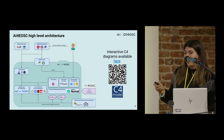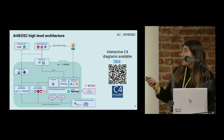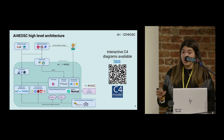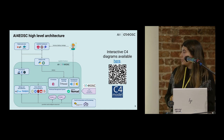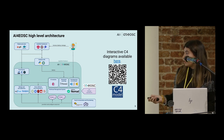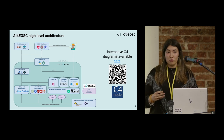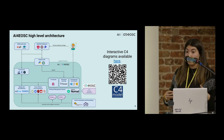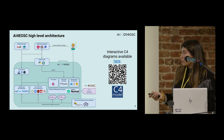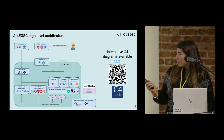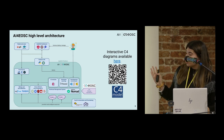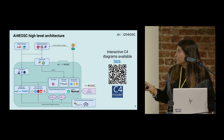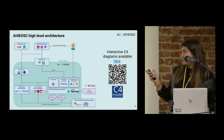Here you have the high-level architecture of the platform we are implementing. I want to focus on the federated learning part. We have Flower as the framework we are mainly using, and you can also see the different development environments we are providing to users. Users can develop their models using JupyterLab, which is quite common, but also Visual Studio Code. The architecture diagrams are available in the C4 model, which is quite intuitive, accessible, and interactive.